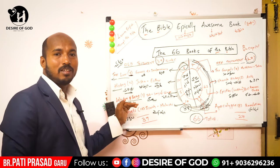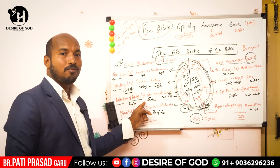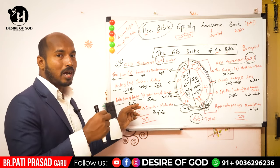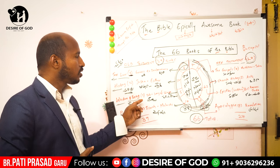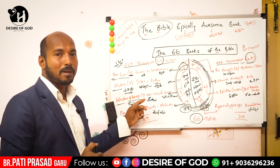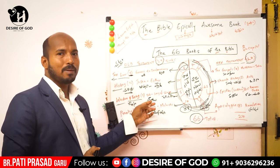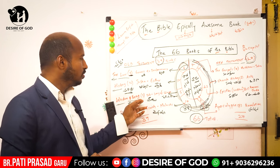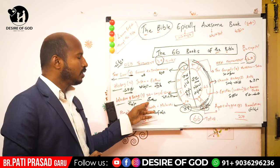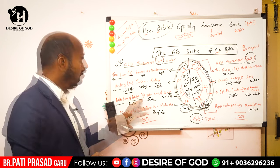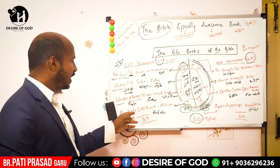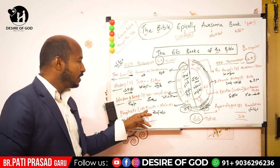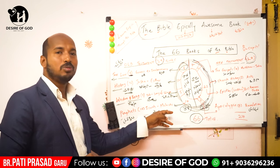The next category is Wisdom and Poetry. After that, the fourth category is the Prophets books — there are 17 books which start from Isaiah to Malachi.